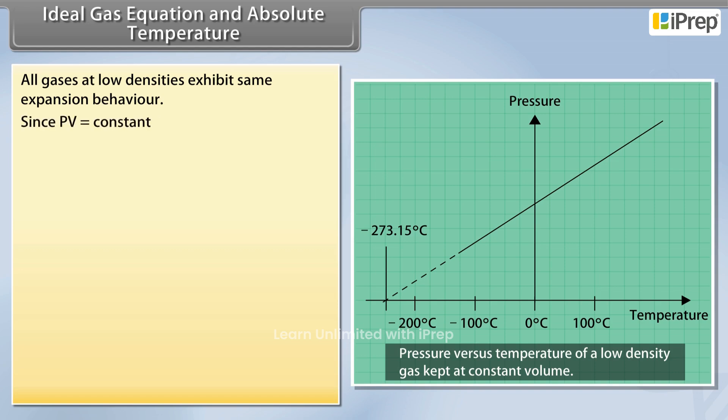Since PV is equal to constant and V upon T is equal to constant, then PV upon T is also constant.